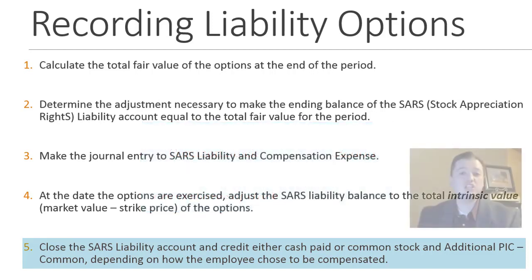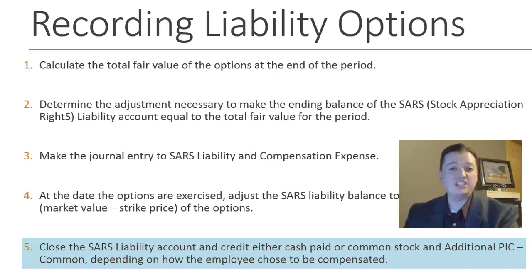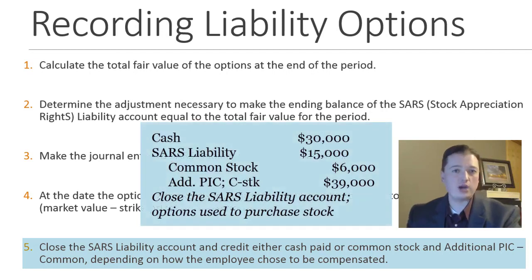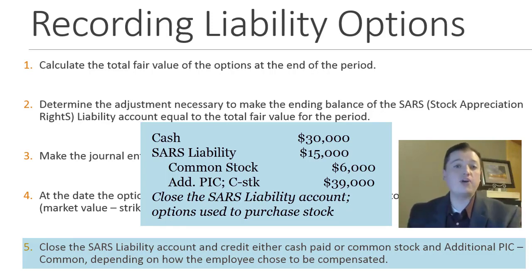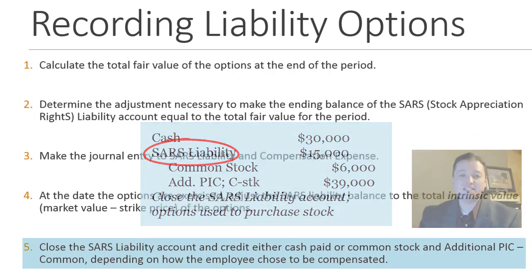Sometimes they'll want shares of stock instead, so I debit SARs liability and credit common stock and additional paid-in capital. They can also use these options to actually buy shares at the intrinsic value. If that happens, I debit the cash they give us for the strike price, debit away the SARs liability, and credit common stock and additional paid-in capital — just like equity options when exercised, except I use SARs liability instead of stock options outstanding.